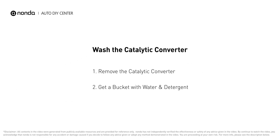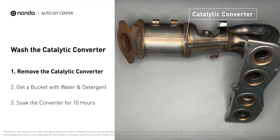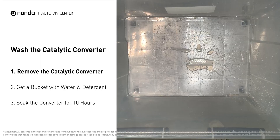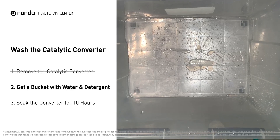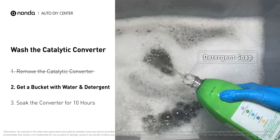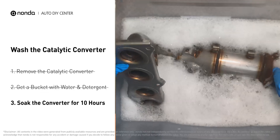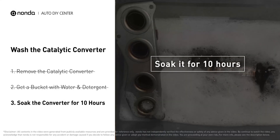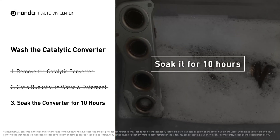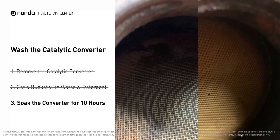If you are getting a P0430 error code, this video is going to show you a practical solution to fix the error code at home. The first thing you need to do is remove the catalytic converter from your vehicle. Then get a bucket, put some detergent soap in it, foam it up, put the catalytic converter into the solution, and soak it for 10 hours to remove all the crud that's inside.